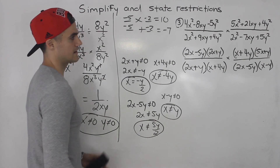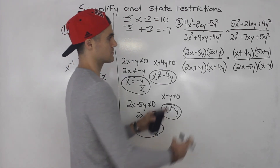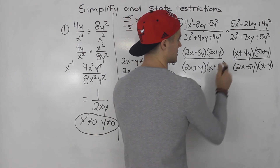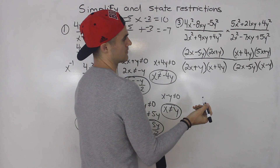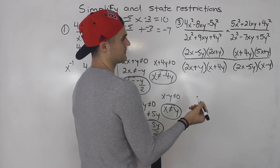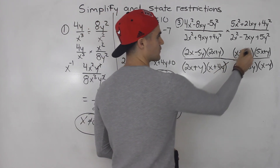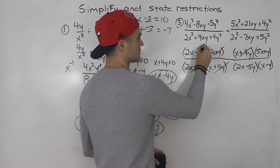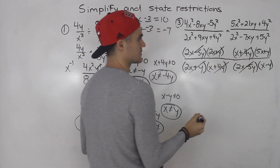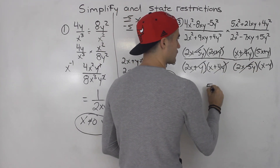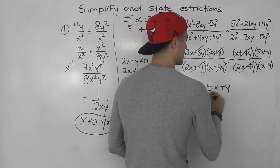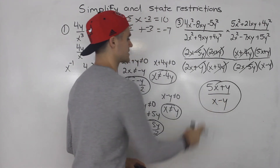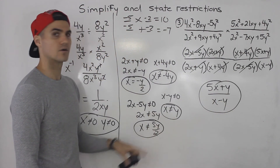Since we're multiplying, we combine into one fraction. Then we cancel: x plus 4y cancels out, the 2x plus y's cancel, and the 2x minus 5y's cancel. So we're left with 5x plus y over x minus y. That's what it simplifies to, with those four restrictions.